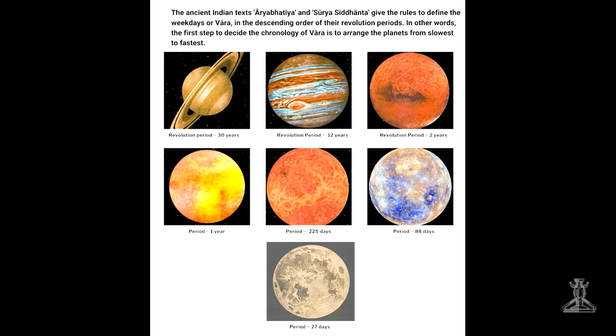In the Indian timekeeping system, 'vara' (weekday) is one of the important attributes. Since the time of Varahamihira, the mention of vara has appeared in Indian texts. According to Varahamihira, the seven great celestial bodies — the Sun, Moon, Mars, Jupiter, Saturn, Venus, and Mercury — were invoked in Yadnya karma. These bodies appear to move in the sky against the background of stars. Observations show that Saturn is the slowest. Based on the time taken to move on the stellar backdrop, the ascending order of their pace is: Saturn, Jupiter, Mars, Sun, Venus, Mercury, and Moon.